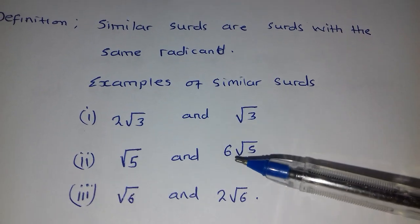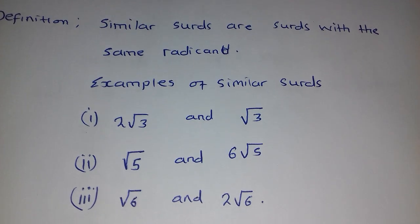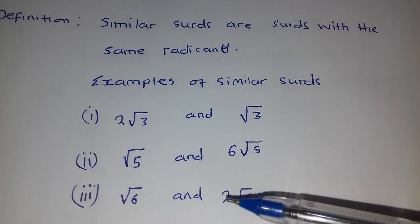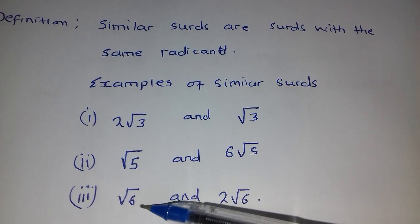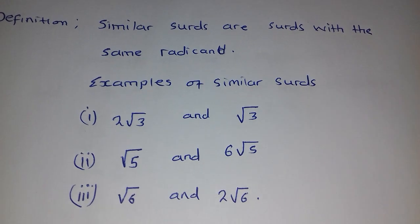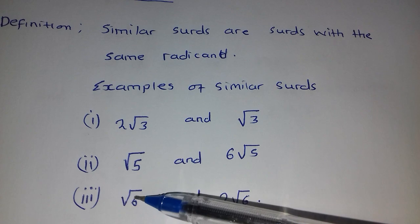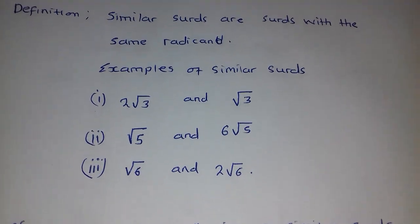Similar surds will always have the same radicand. Look at this one, the coefficient here is 1, the coefficient here is 2, but the radicand here and there is just the same, we have 6, so these two are similar surds.